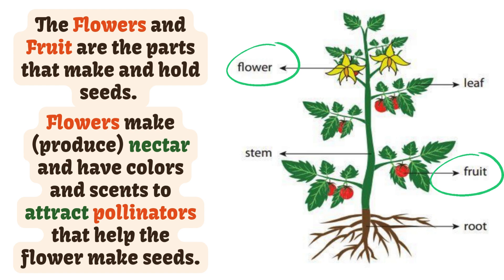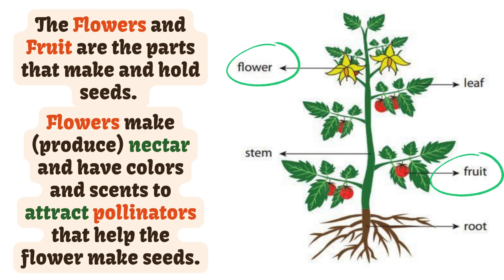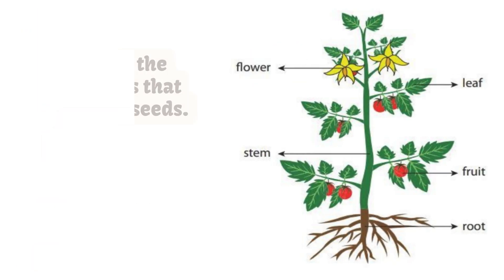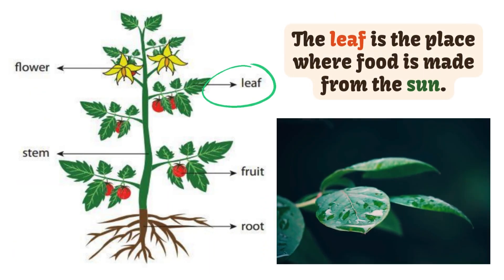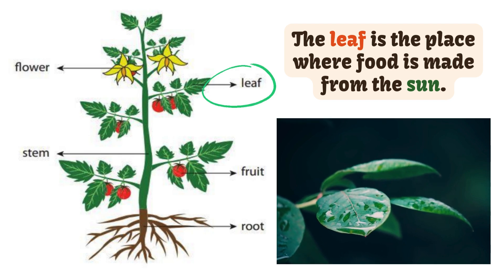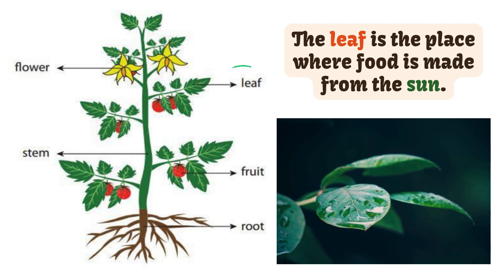The stem also provides structure for the plant. The flowers and fruit are the parts that make and hold seeds. Flowers make or produce nectar and have colors and scents to attract pollinators that help flowers make seeds. Fruits are the fleshy parts that contain the seeds. The leaf is the place where food is made from the sun.